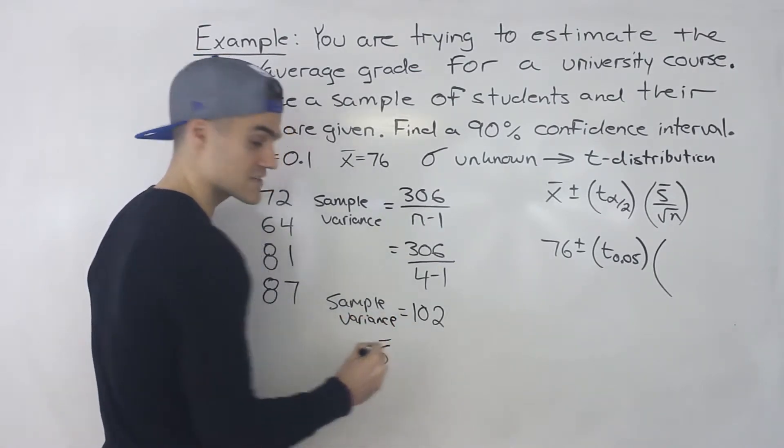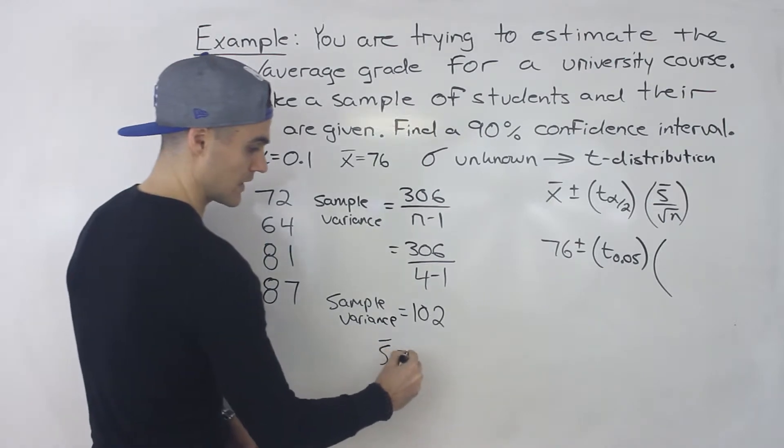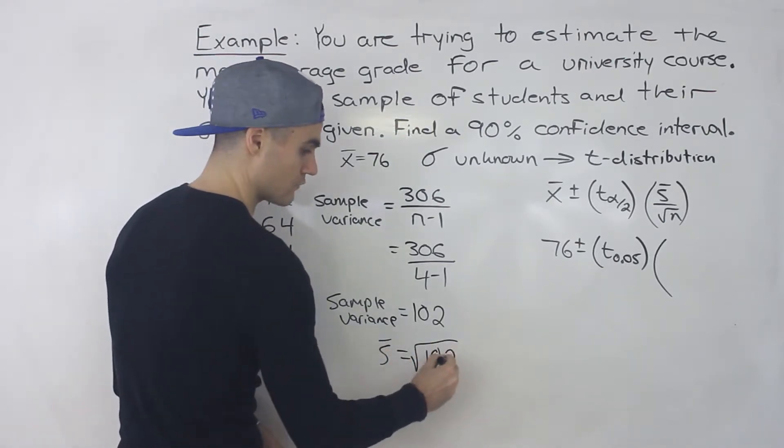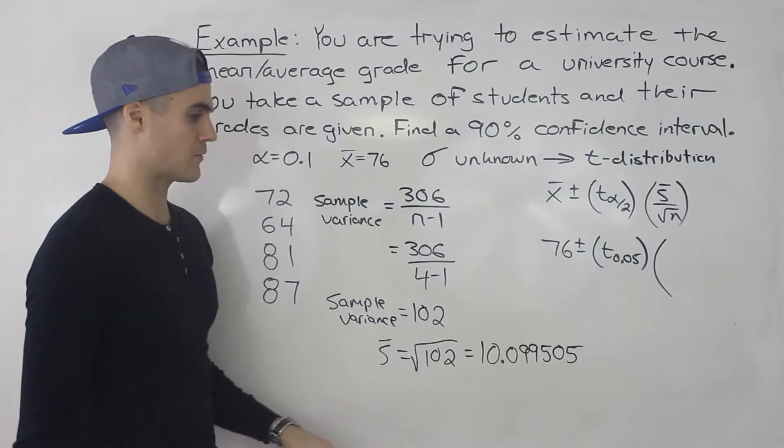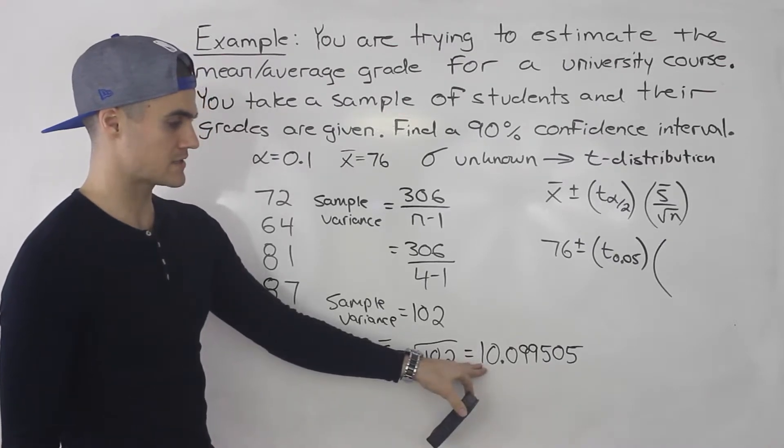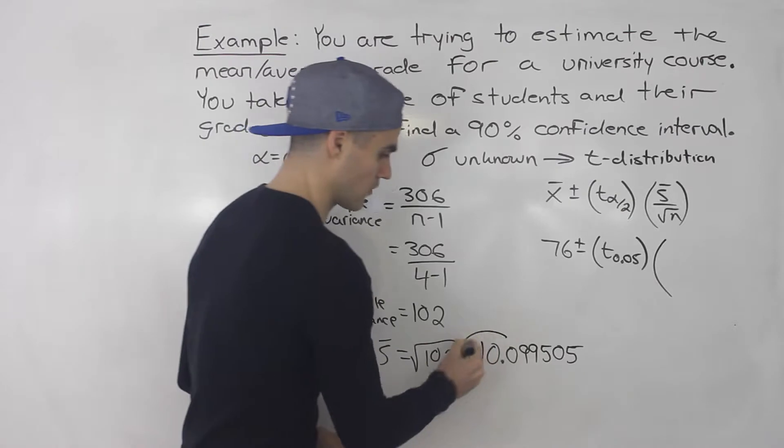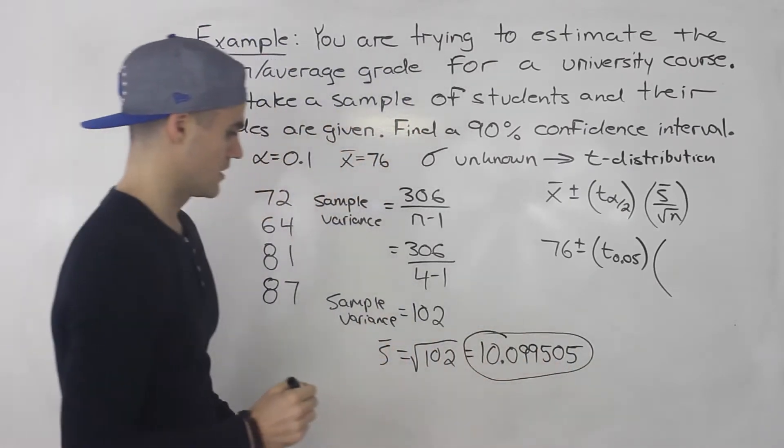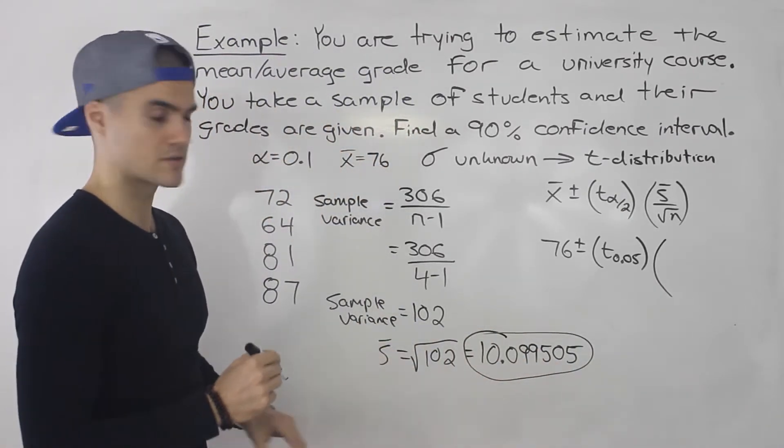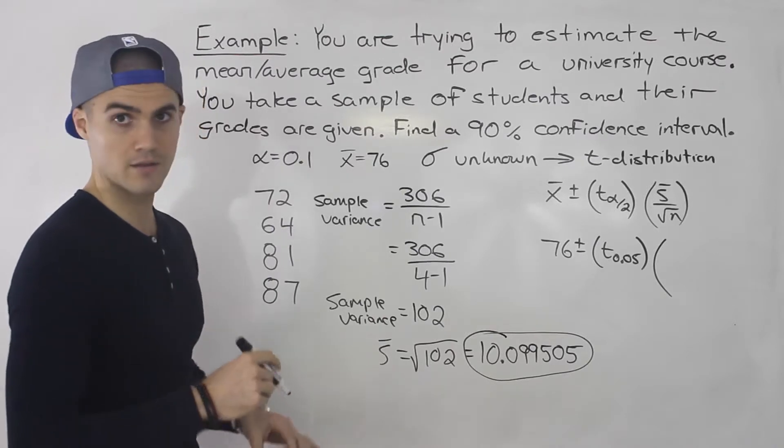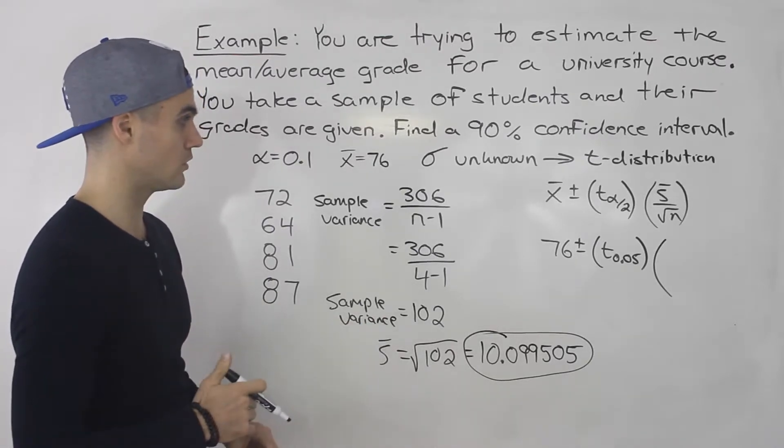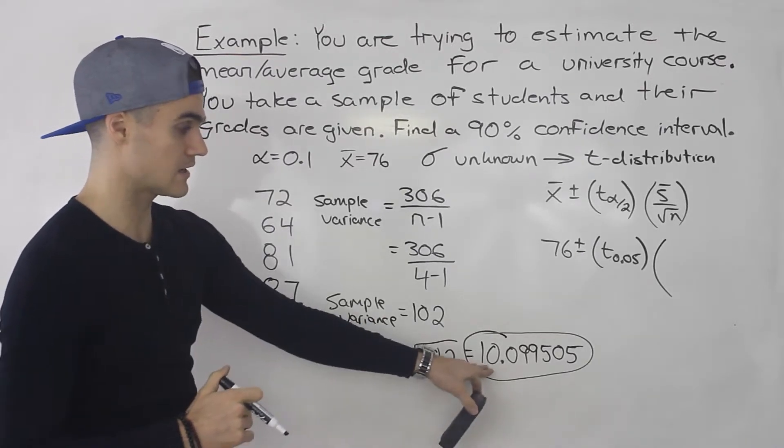And so to get the sample standard deviation, we got to take the square root of the sample variance. And when you do that in your calculator, you'd end up getting 10.099505. So I didn't round too much. But nevertheless, that's the sample standard deviation. And that's probably the hardest part of this whole problem is getting that number manually.